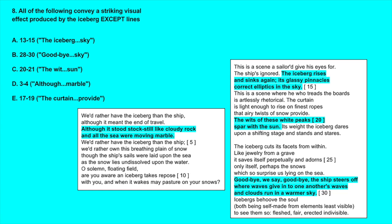And finally E, lines 17 through 19 - these lines read the curtain is light enough to rise on finest ropes that airy twists of snow provide. So if we read through all of these, B, lines 28 through 30, are the only lines that are clearly not giving us any image of the iceberg at all.